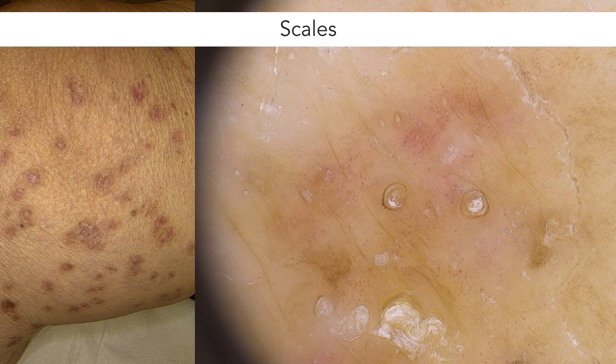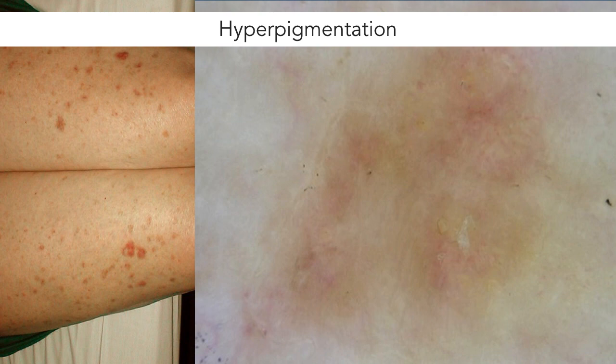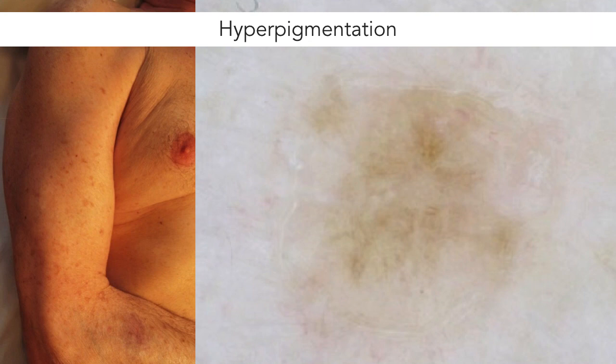Here's another case with scales within the central area. As you can see, there are also some peripheral areas of light brown hyperpigmentation. Hyperpigmented areas can be seen in some porokeratoses, such as in this case of DSAP. Here's one more case of hyperpigmentation in another case of DSAP.